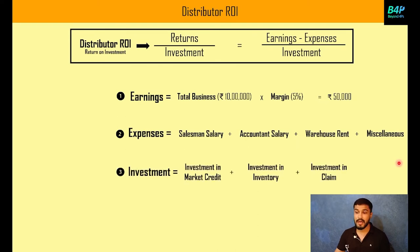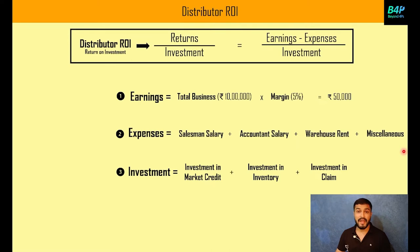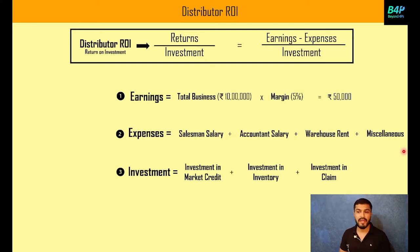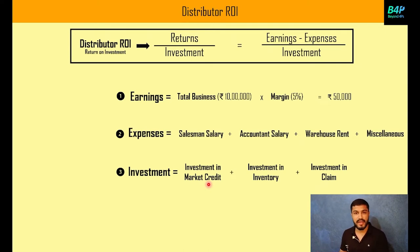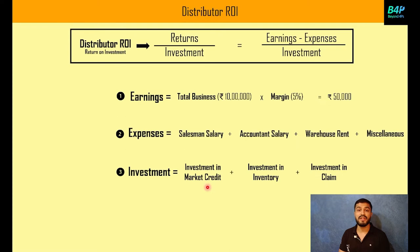The third component is investments, where there is more confusion about how to calculate it. A distributor's investment can be divided into three types. The first is market credit — a company motivates the distributor to provide stock to retailers without upfront payment, building goodwill. The distributor supplies stock and receives payment after 10 days. This is one of his investments — he has invested on the company's behalf in the market in the form of market trade.